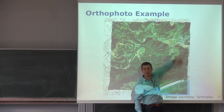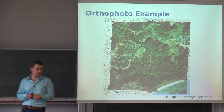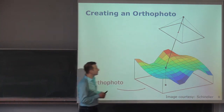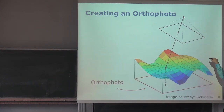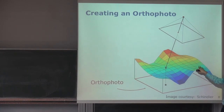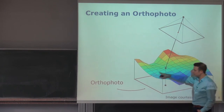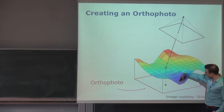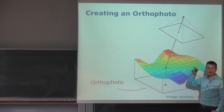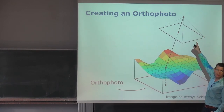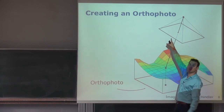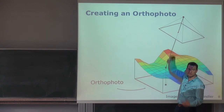Measuring distances directly in the image dramatically simplifies the measurement process. To understand how orthophotos are generated: we have the projection center of the camera and the image; we observe a surface. We want to take those points on the surface and project them onto the ground, which becomes the generated orthophoto — equivalent to what we'd get from a camera infinitely far above looking straight down, where all rays are parallel.